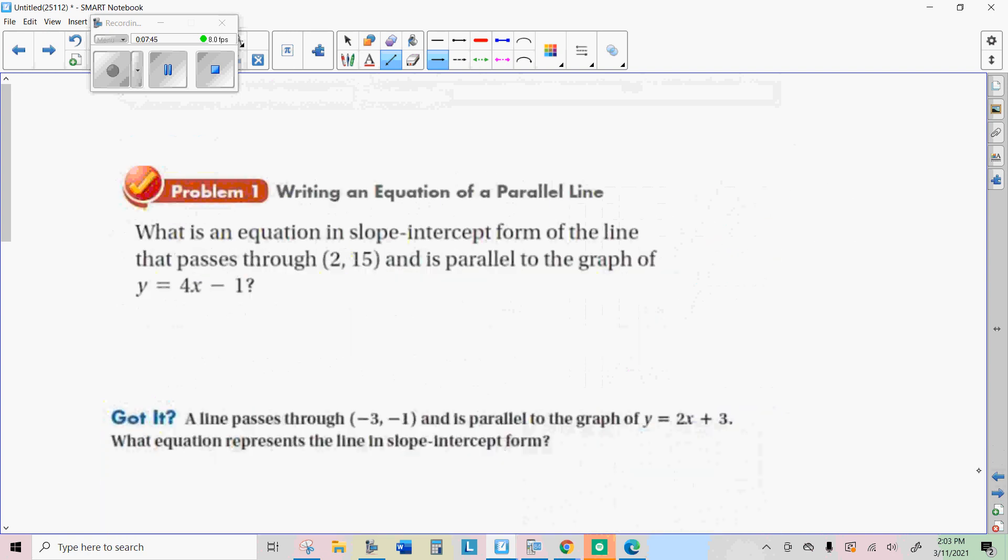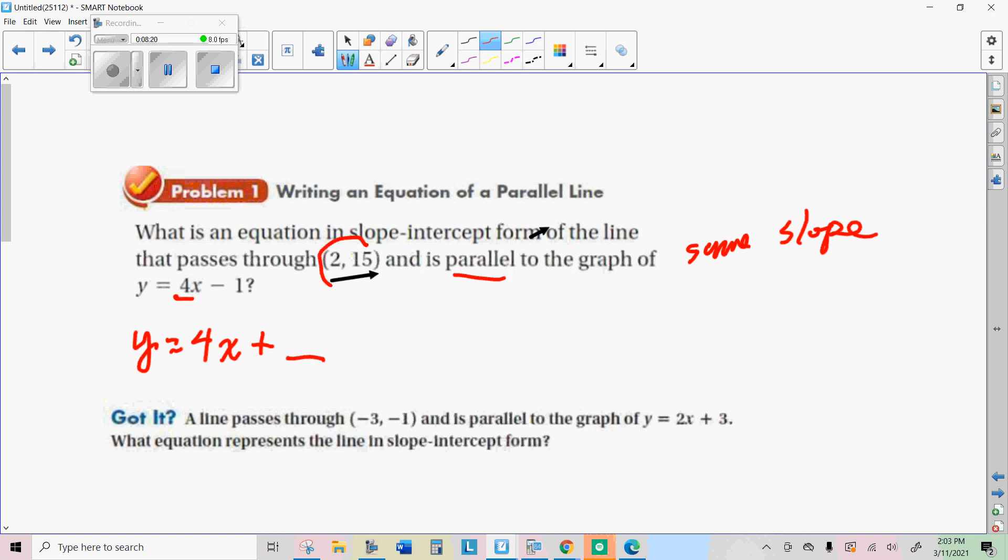We want the equation of a line in slope-intercept form that passes through the point (2, 15) and is parallel to the graph of this. Because we know it's parallel, we know we want the slope to be the same. So I want the slope to be 4. So I know this equation will be y = 4x and then plus whatever works to make this a solution. Substitute the 2 in for x, substitute the 15 for y, and figure out what you need to add. 4 times 2 is 8. 8 plus 7 is 15. So the y-intercept is 7. The answer is y equals 4x plus 7.